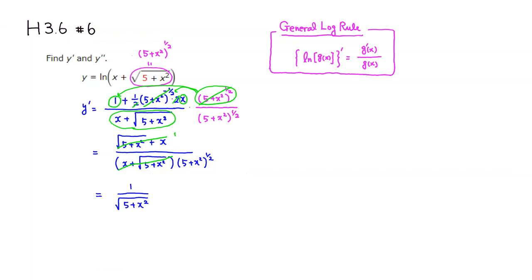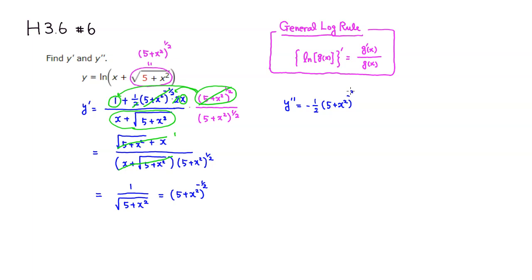Let's do the second derivative. Again, I don't like square roots when taking derivatives, so I'm going to rewrite it as the quantity (5 plus x squared) to the negative 1/2 power, since it's sitting on the bottom — square root is 1/2, so on the bottom it's negative 1/2. By the general power rule: bring the negative 1/2 in front, keep the same quantity (5 plus x squared), subtract 1 from negative 1/2 to get negative 3/2, then by chain rule multiply by the derivative of the inside, which is 2x.